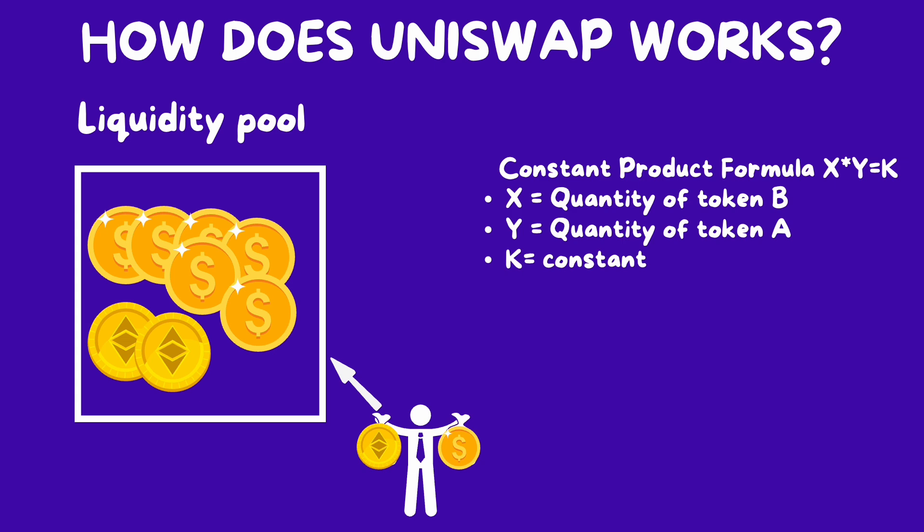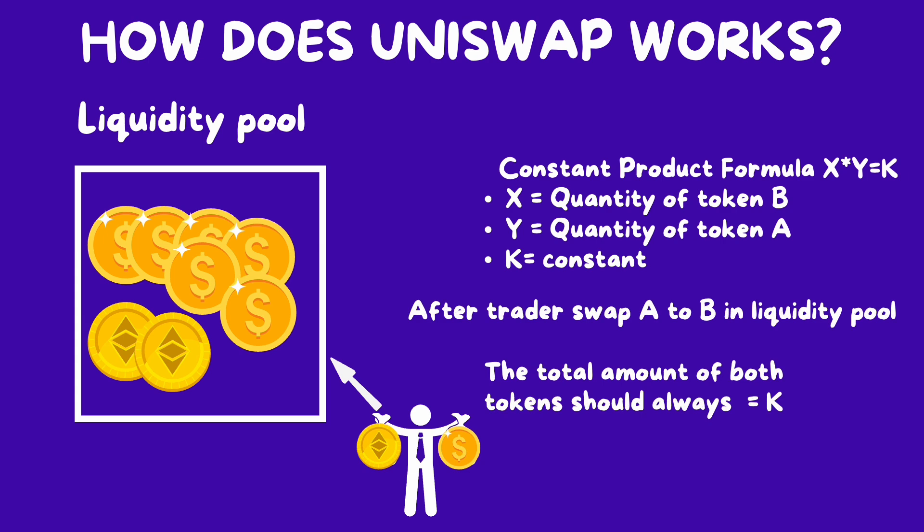The product of the quantities of two tokens remains constant. The formula is represented as x times y equals k, where x is the quantity of token A in the pool, y is the quantity of token B in the pool, and k is the constant. When a user makes a trade by adding token A and withdrawing token B, the total amount of both tokens remains the constant k.